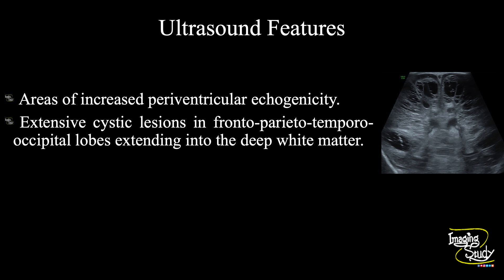So, in summary, periventricular increased echogenicity areas are seen. Extensive cystic changes are noted involving the frontoparietal, temporal, and occipital lobes, extending up to the deep white matter. These features conclude this as a case of periventricular leukomalacia grade 4.